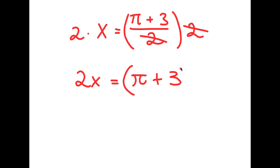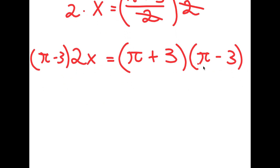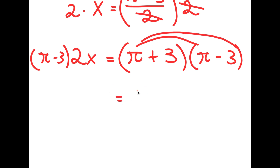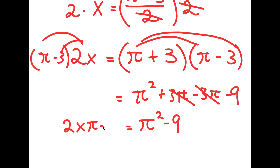From here, I'm going to multiply both sides by pi minus 3. So I have pi minus 3 times 2x is equal to pi plus 3 times pi minus 3. Now pi plus 3 times pi minus 3 — I distribute the pi, so I get pi squared plus 3pi minus 3pi, which cancel out, plus 3pi minus 3pi — these cancel — and then I have minus 9 at the end. So this is pi squared minus 9. And for my left-hand side, I distribute the 2x to get 2x*pi minus 6x.